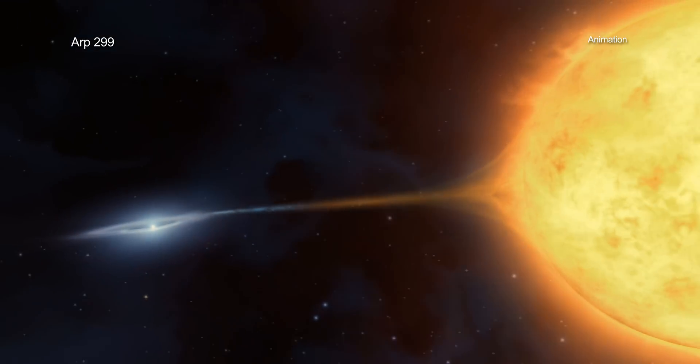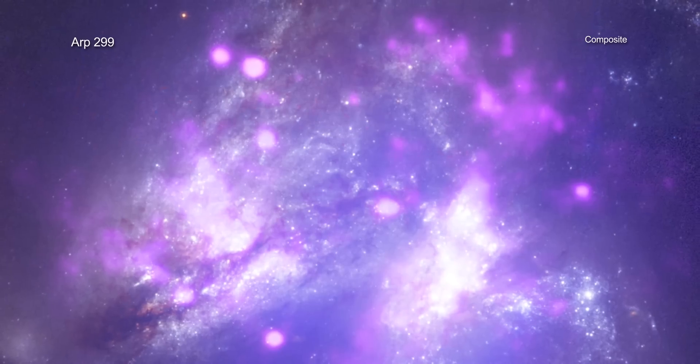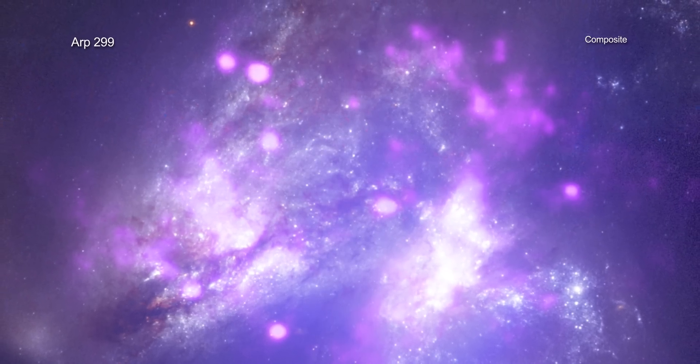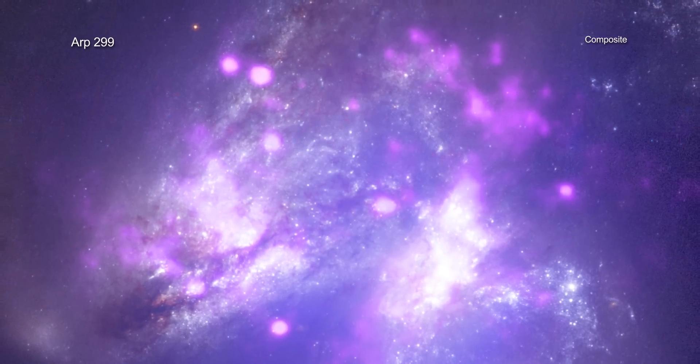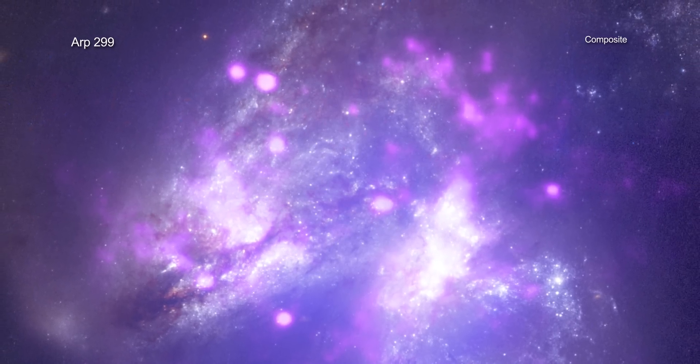Such a loaded buffet of high-mass X-ray binaries is rare, but ARP 299 is one of the most powerful star-forming galaxies in the nearby universe. This is due, at least in part, to the merger of the two galaxies, which has triggered waves of star formation.